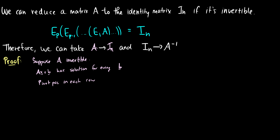This means that there is a pivot position in each row. If A is invertible, the matrix has to be square. And if it's square and there's a pivot position in each row, that means we can get to the identity matrix — it is row reducible, there is a solution. So therefore, we can get A to go to the identity matrix, and we've proven that we can get A to the identity matrix.